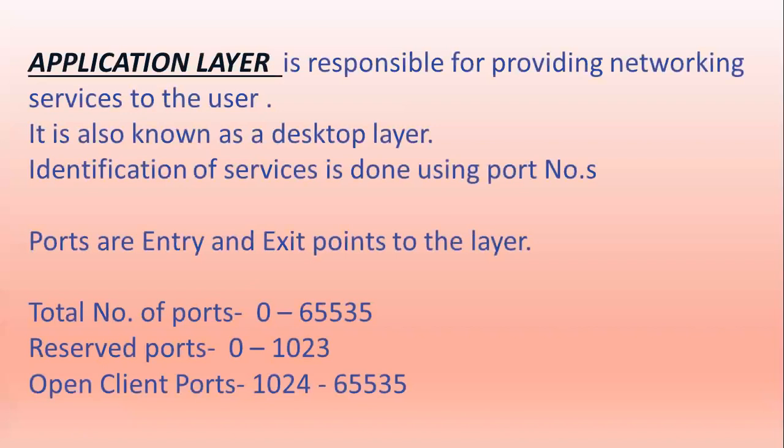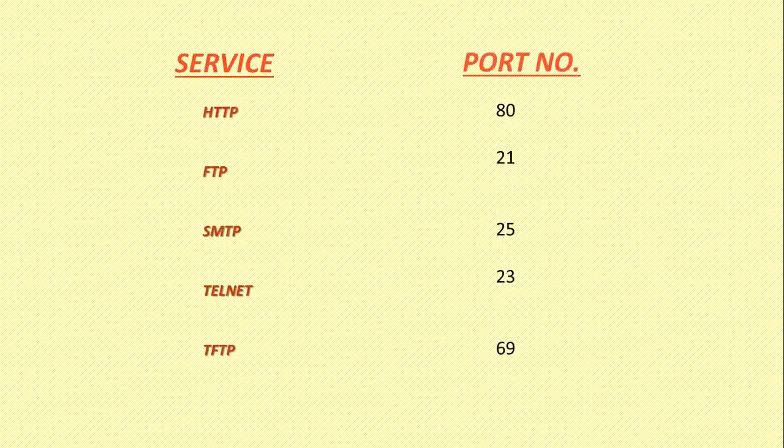Starting with the application layer: it is responsible for providing networking services to users. It is also known as the desktop layer. The identification of services is done using port numbers. Port numbers are the entry and exit points to the layers. The total number of ports is 0 to 65535, out of which there are reserved ports and open client ports. The reserved port range is 0 to 1023, and the open client port range is 1024 to 65535. For example, HTTP has port number 80, FTP 21, SMTP 25, Telnet 23, and TFTP 69.